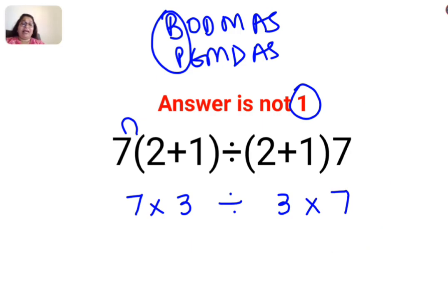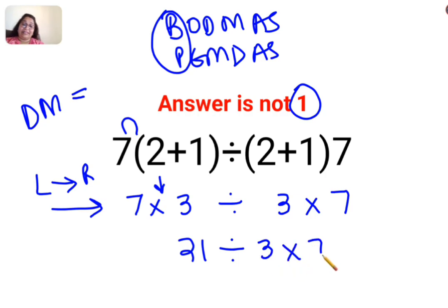Please understand, when you have something like this, you need to realize division and multiplication hold equal precedence. So in sums like these, you always have to go from left to right. Whatever operation happens first from your left-hand side has to be done first. So 7 multiplied by 3 is 21 divided by 3 multiplied by 7. So 21 divided by 3 is 7 multiplied by 7. The answer for this question is supposed to be 49.